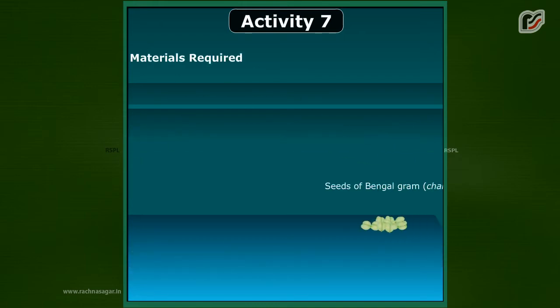Materials required: seeds of Bengal gram (chana), water, bowl, and wet cloth.